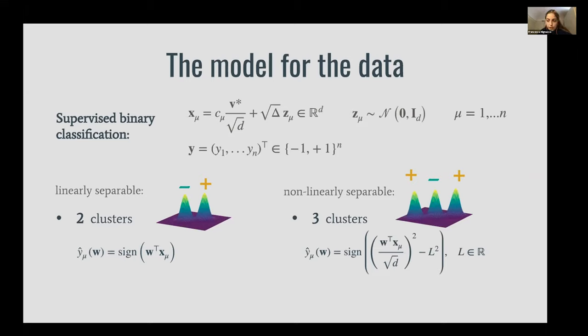We consider also a non-linearly separable case where we have three Gaussian clusters with a door activation function. The labels can be either plus one and minus one for the left and right cluster in the linearly separable case, and in the non-linearly separable case we take the two external clusters with the same label and the central cluster with an opposite label.